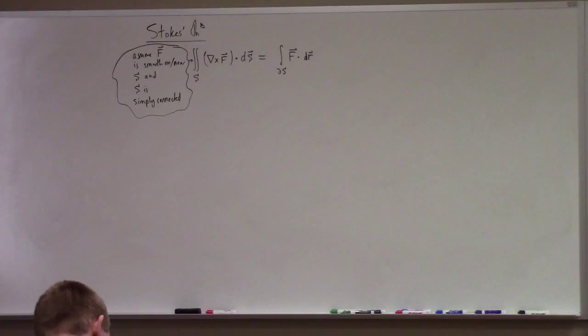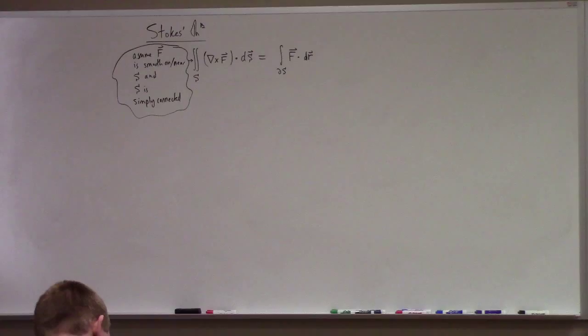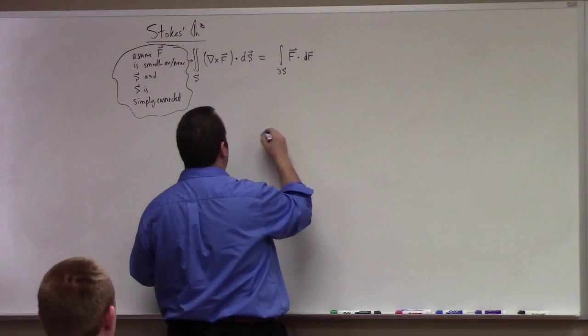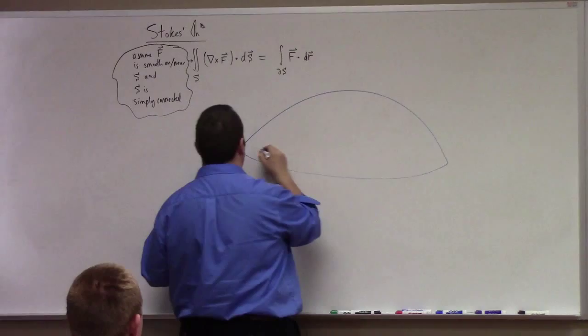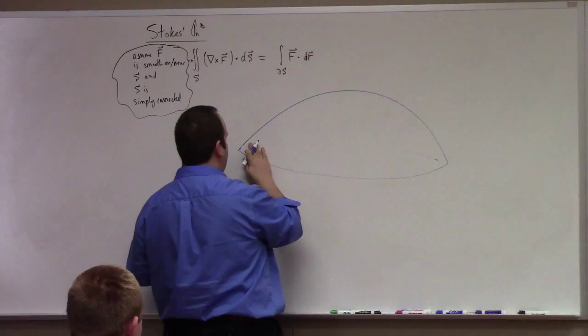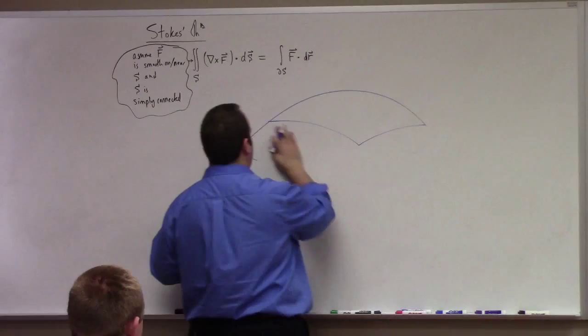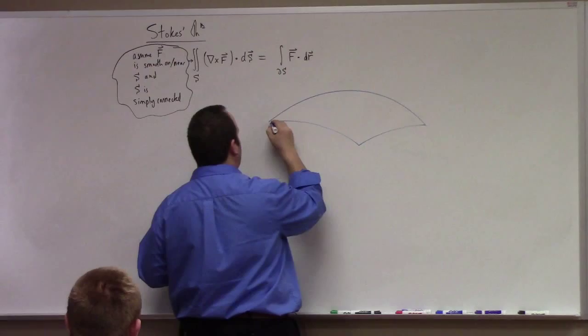What does it mean for a surface to be simply connected? No holes. So roughly speaking, it could look something like this. It doesn't have to be perfectly smooth — it could have some corners. The boundary has to be a piecewise smooth boundary.